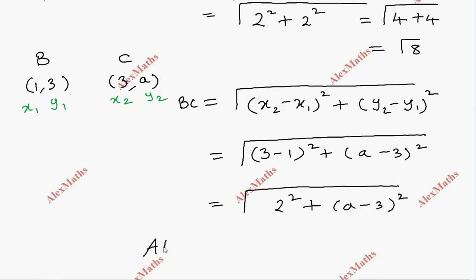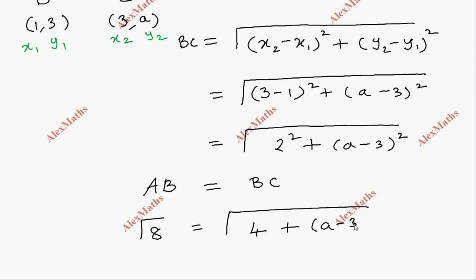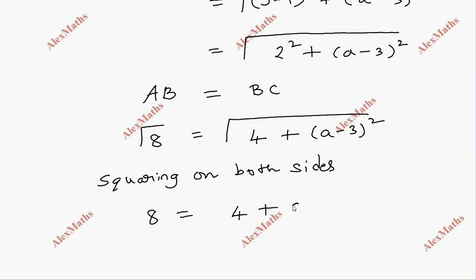Applying the condition AB equal to BC: AB is root 8, and BC is root of 2 square, which is 4, plus (a minus 3) whole square. Squaring on both sides, it is 8 equal to 4 plus (a minus 3) whole square.